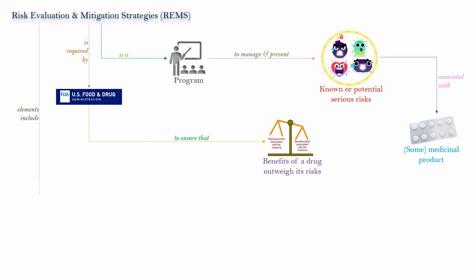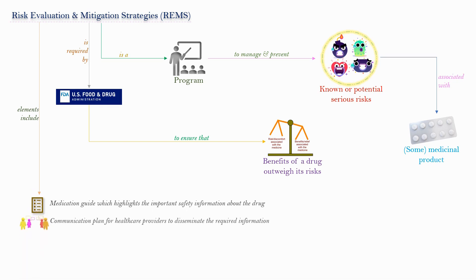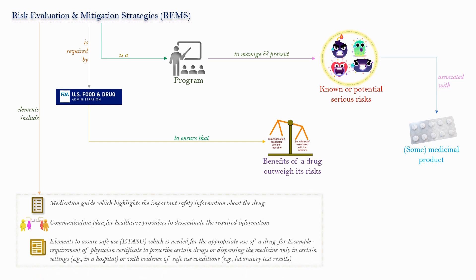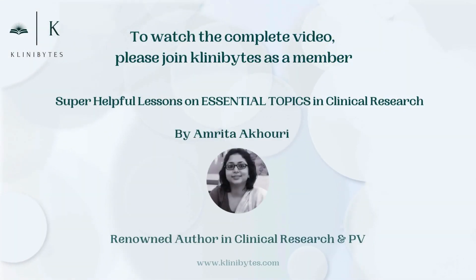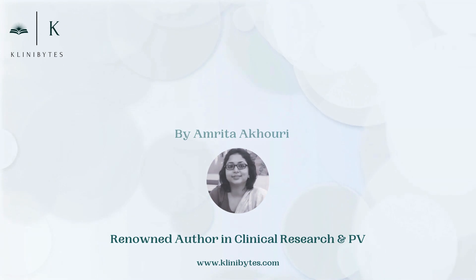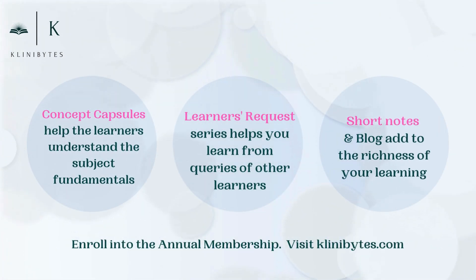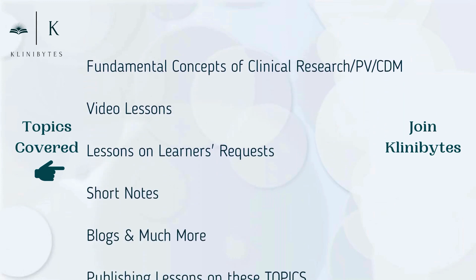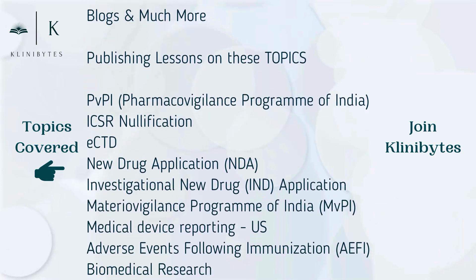Elements of REMS program include: a Medication Guide which highlights the important safety information about the drug; a communication plan for healthcare providers to communicate the required information; and elements to ensure safe use which are needed for the appropriate use of a drug — for example, requirement of physician certificate to prescribe certain drugs or dispensing the medicine only in certain settings.